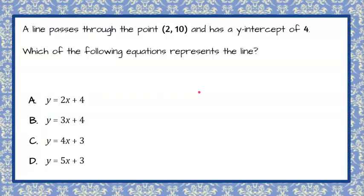Here's our question. A line passes through the point 2,10 and has a y-intercept of 4. Which of the following equations represents the line?